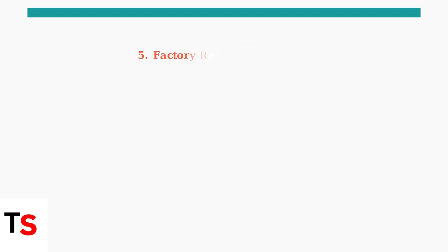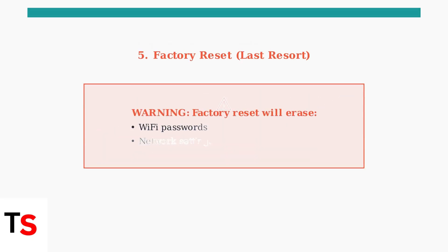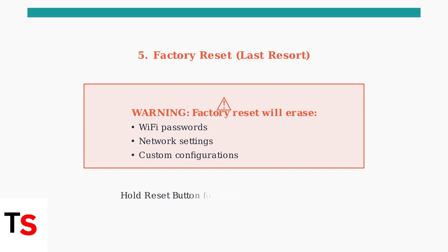If problems persist after trying all previous steps, a factory reset may be necessary. However, this will erase all your custom settings including Wi-Fi passwords and network configurations. To perform a factory reset, use a paper clip to press and hold the reset button on the back of your router for seven seconds until the power light turns amber. You'll need to reconfigure everything afterward.